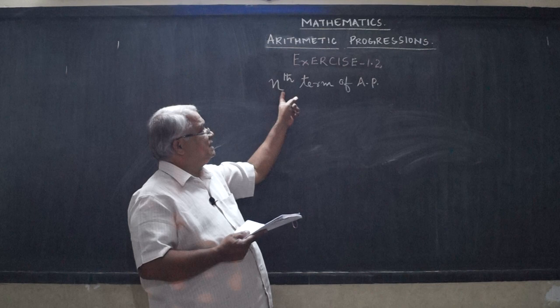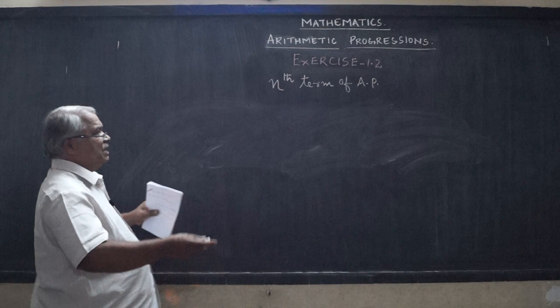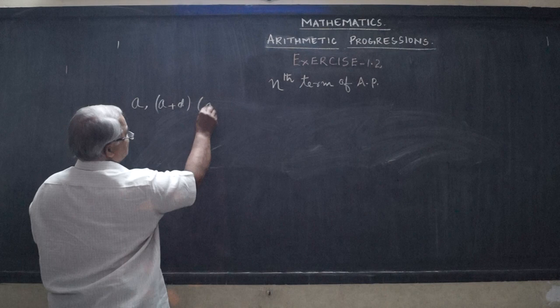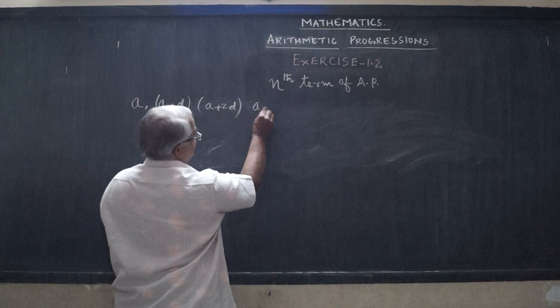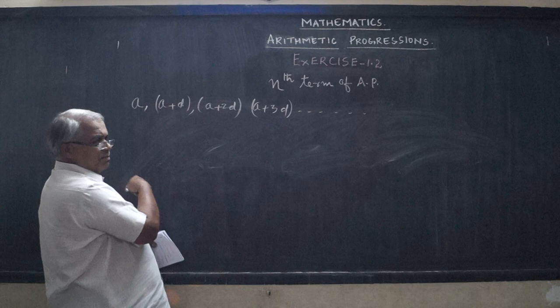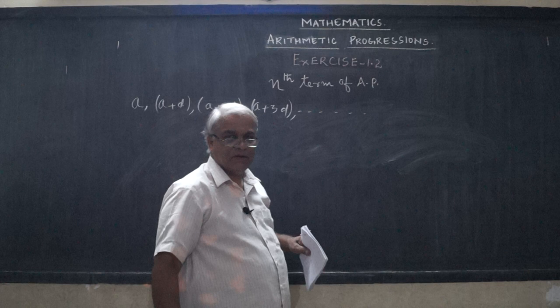We know the general form of AP: the first term is 'a', then a plus d, a plus 2d, a plus 3d, and so on. You can write any number of terms. So the first term is a, second term is a plus d, third term is a plus 2d, fourth term is a plus 3d, etc.